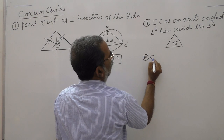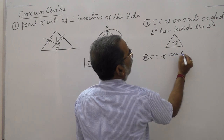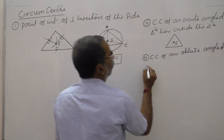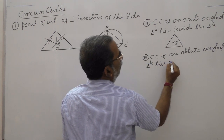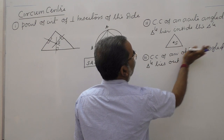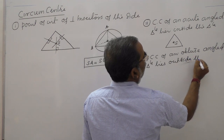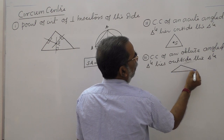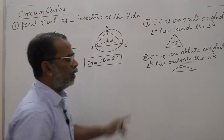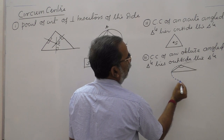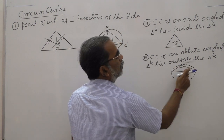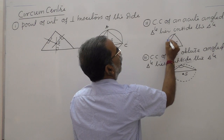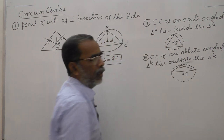The circumcenter of an obtuse-angled triangle lies outside the triangle. If you take an obtuse-angled triangle — one where an angle is more than 90 degrees — and draw its circumcircle, the center of that circle lies outside the triangle.